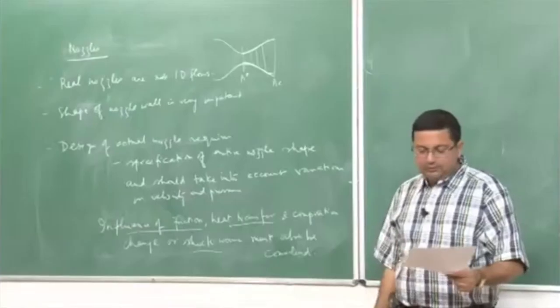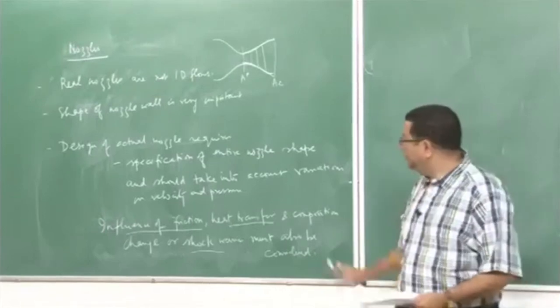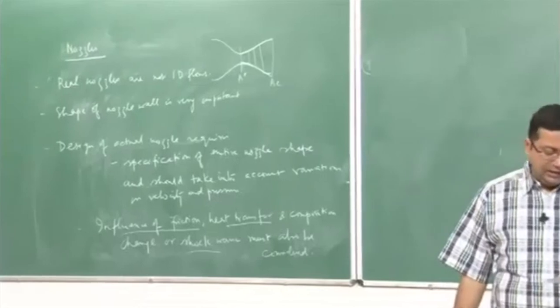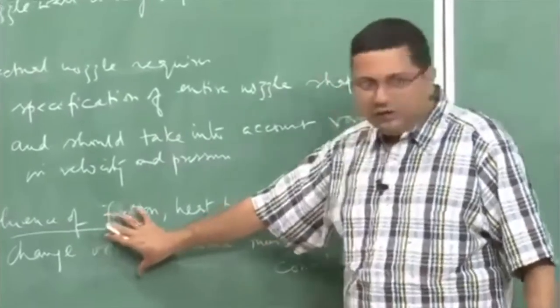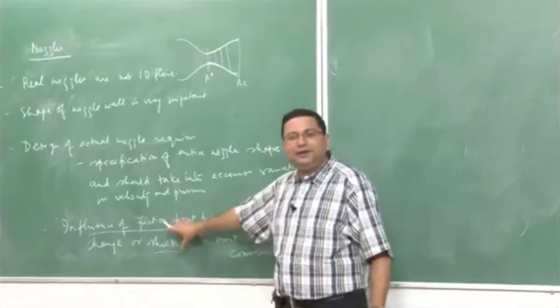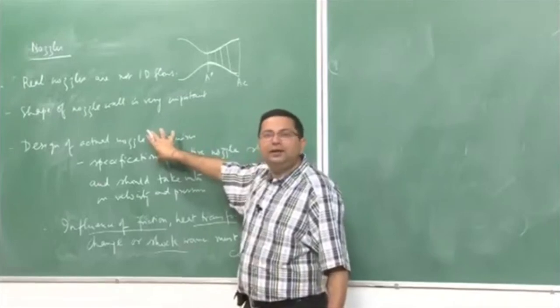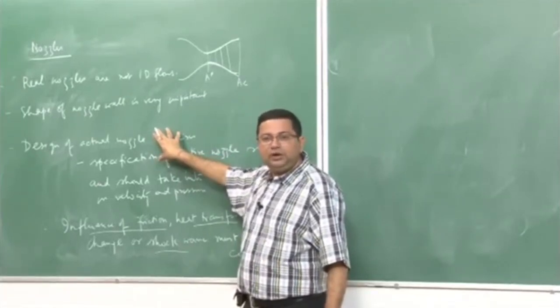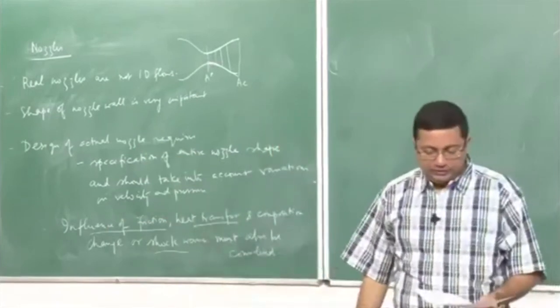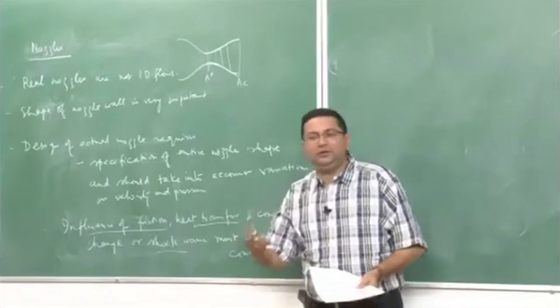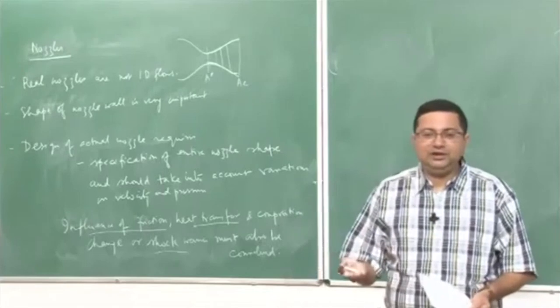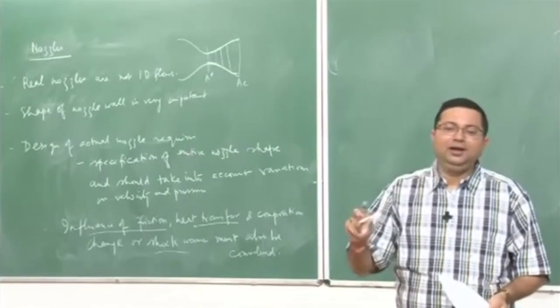We will first start with determining the suitable shape of the nozzle. We will not go into details of friction and heat transfer effects in this course — just passing remarks. We will primarily focus on the required shape, starting with a conical shape and then moving to how to determine the exact curved shape employed in practical rockets. We will stop here now and continue in the next lecture. Thank you.